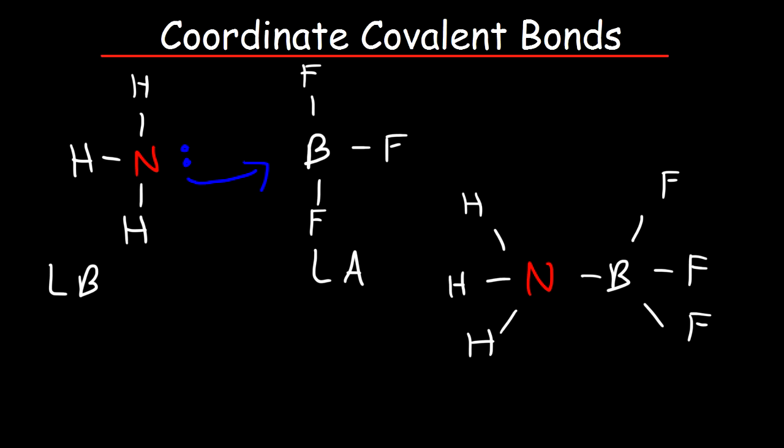The reason why nitrogen attacks boron is because nitrogen has a partial negative charge. It's more electronegative than hydrogen, and boron has a partial positive charge. So there is an electrostatic force of attraction that accelerates these two elements toward each other, and they react.